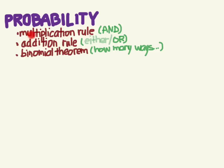Let's continue our study of probability. Probability is a branch of mathematics all into itself, but we're not going to go into all that. There are three things you should know: the multiplication rule, the addition rule, and the binomial theorem. The multiplication rule you could also call the 'and' rule, the addition rule is the 'or' rule — technically the 'either/or' rule — and the binomial theorem answers the question 'how many ways can you...'